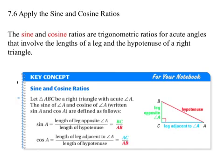Section 7.6, apply the sine and cosine ratios. The sine and cosine ratios are trigonometric ratios for acute angles, just like the tangent ratio was for acute angles.